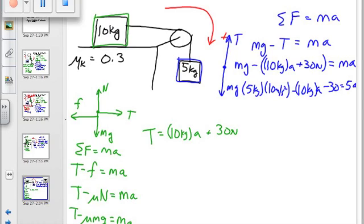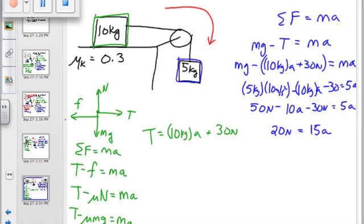You're going to get all your values in the same... 50 minus 10a minus 30... 50 minus 30 is 20 newtons equals 15A, so A is 20 over 15 meters per second squared.